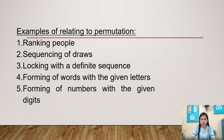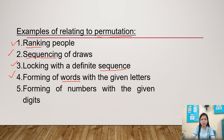Examples relating to permutations: number one is ranking people — from the word 'rank' it is an ordered element. Number two is sequencing of rows — from the word 'sequence' it is an ordered element. Number three is locking with a definite sequence. Number four is forming words with given letters — it is an ordered element. Number five is forming numbers with given digits — these are all examples of permutation.